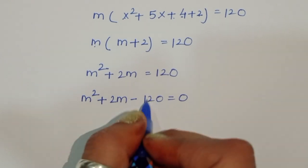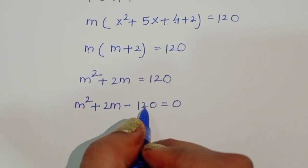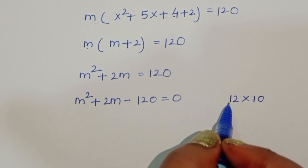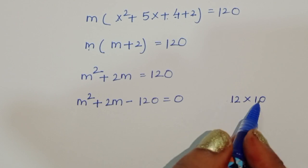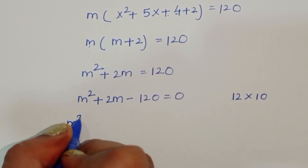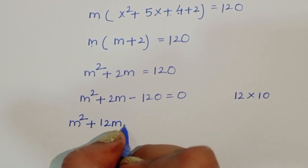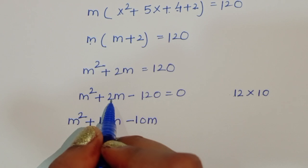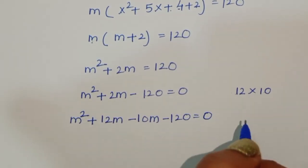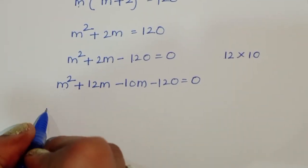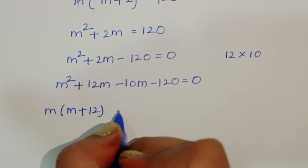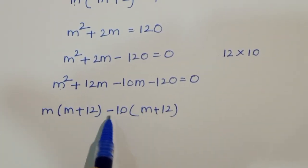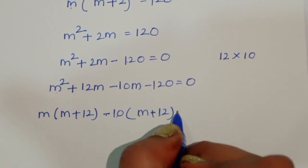To factor m² + 2m - 120 = 0, we need two numbers whose product is 120 and difference is 2. That's 12 and 10, since 12 × 10 = 120 and 12 - 10 = 2. So we write (m + 12)(m - 10) = 0.